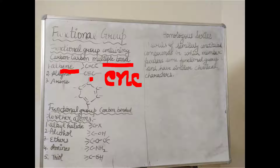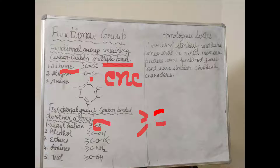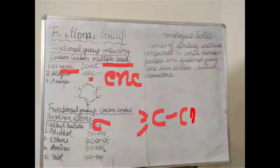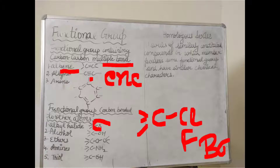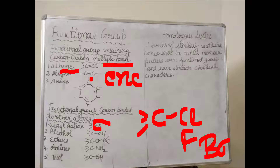Like there is alkyl halide — this C bond is there and it can be connected with any halide group like chlorine, fluorine, bromine, or iodine. Any group can be there. Then the alcohol group is there — carbon is attached with an OH group. That is the alcohol group.